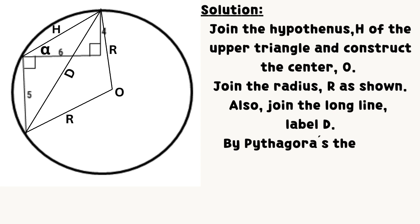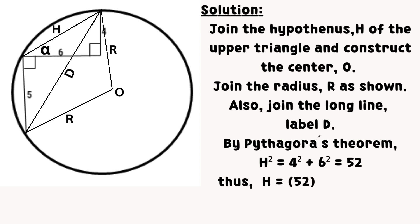Also join the long line, label D. By Pythagoras theorem, substituting values, we have that H equals the square root of 52, which equals 2 times the square root of 13.